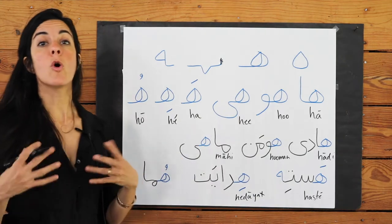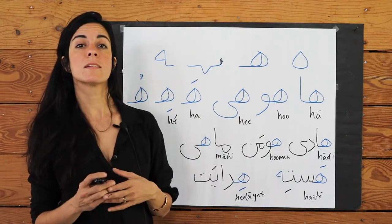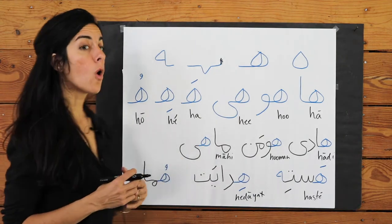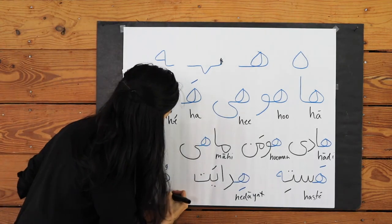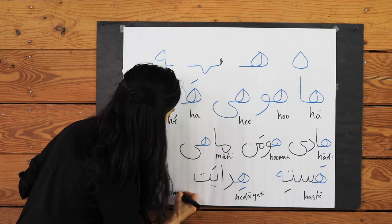H with an O accent: Homa — and that is a woman's name, Homa.